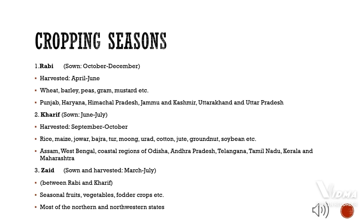Zaid crop: Sown and harvested March to July, between Rabi and Kharif seasons. Crops include seasonal fruits, vegetables, fodder crops, etc. Grown mostly in the northern and north-western states.